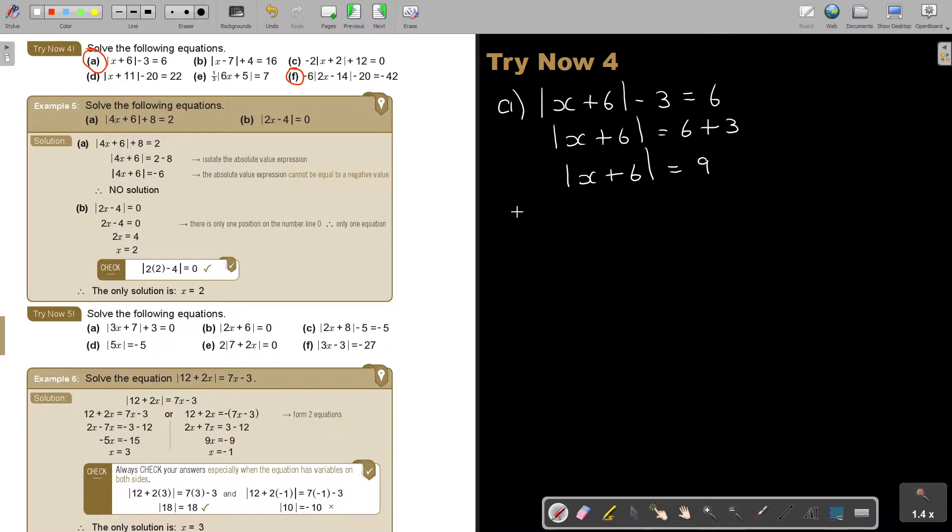And now, you get your two options. So, don't write your bars anymore. Say, x + 6 is equal to the positive side or x + 6 can also be to the negative side. And now, I get, therefore, x is 9 - 6 and that's 3, or x is -9 - 6 and that's -15.